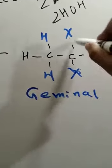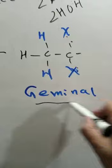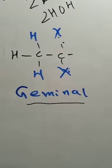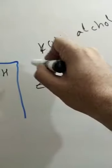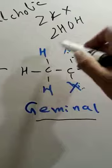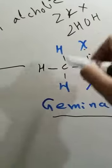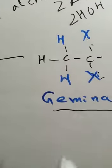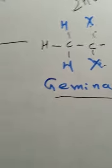We will use geminal dihalide. We have two halogens. When we put two OH with two OH, how many? Two OH. So we have two halogen and two OH and H. And here we have two bonds. And this will be a triple bond.